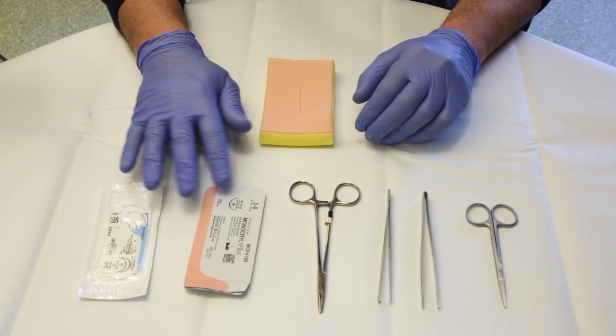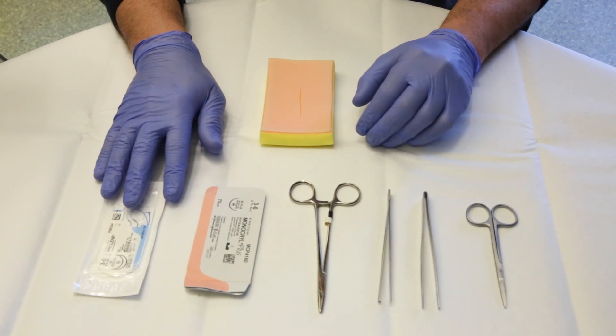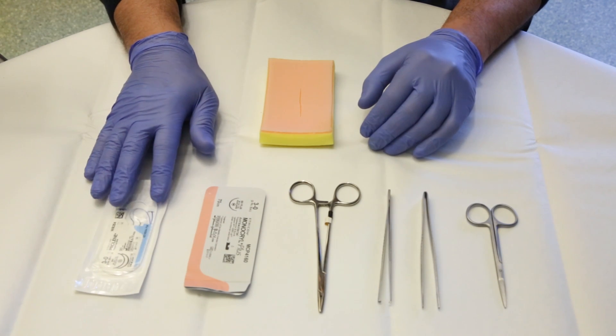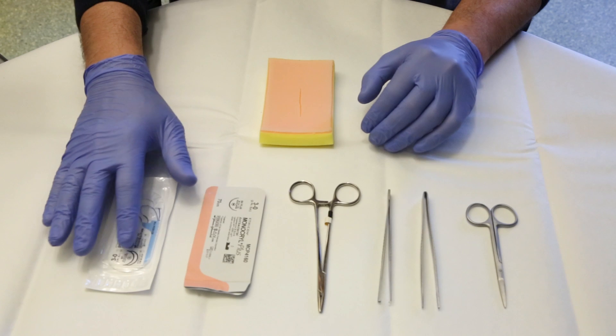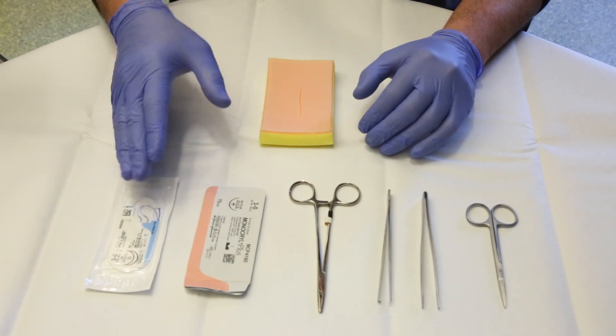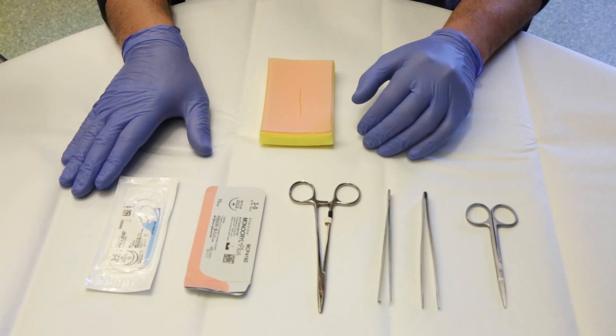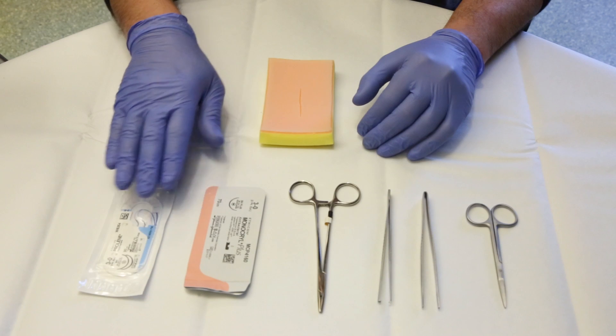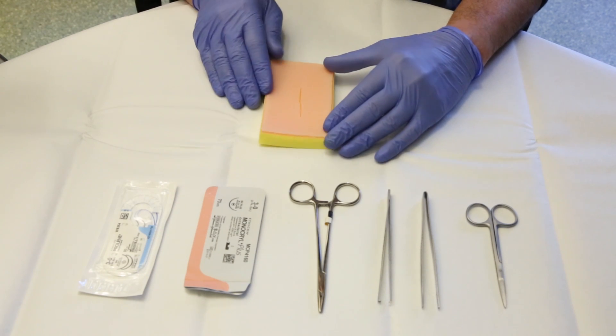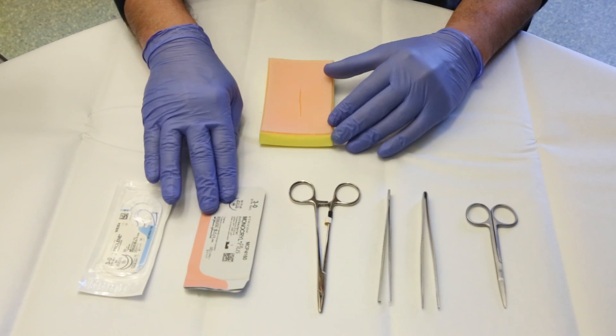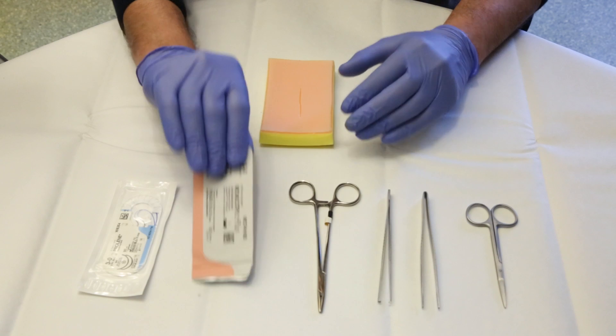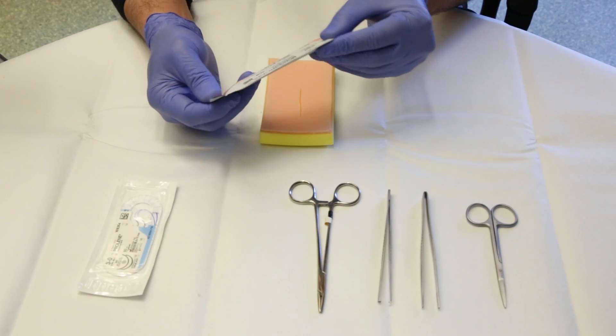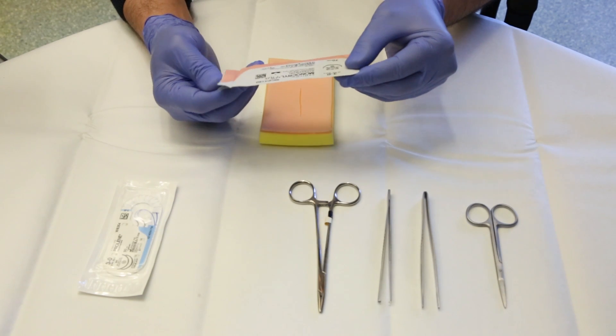In regards to the stitches, there are different types of stitches, different on the needle type or the stitch type, the size of it. Today we'll demonstrate a simple stitch with a 3-0 monokryl stitch.